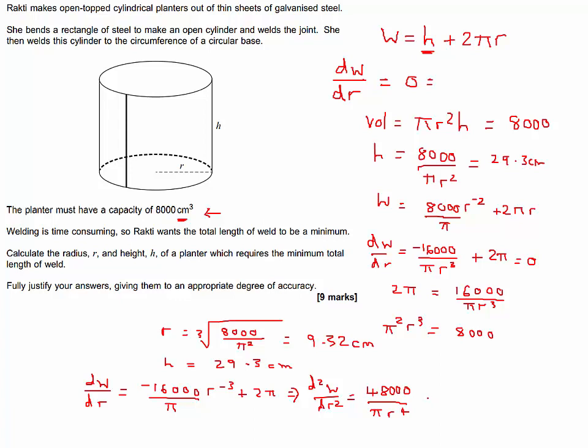This term here, we know the value of R, we know it's a positive value. It would obviously have to be being a length, wouldn't it? So clearly this is positive. So we've found our minimum.